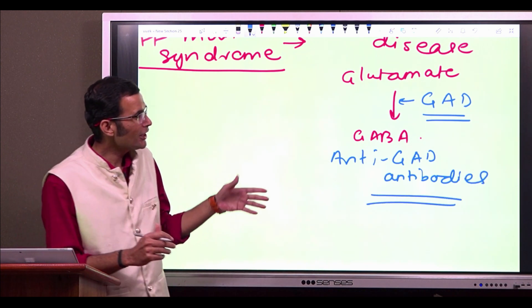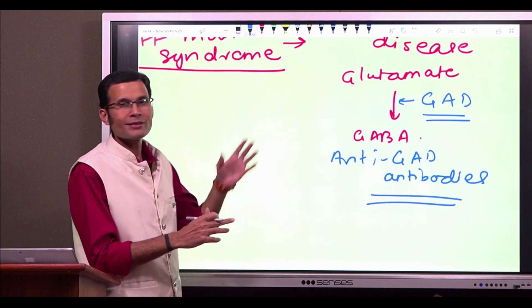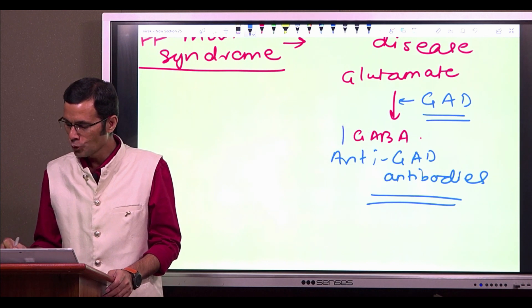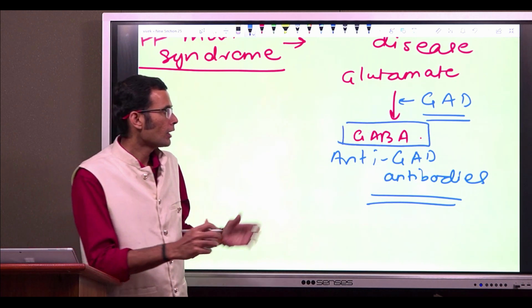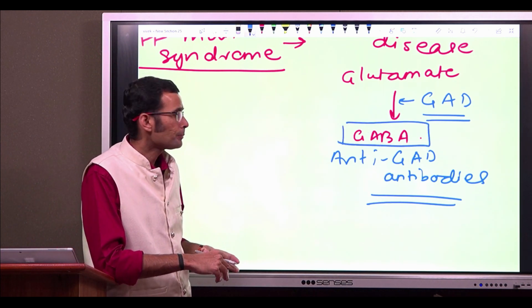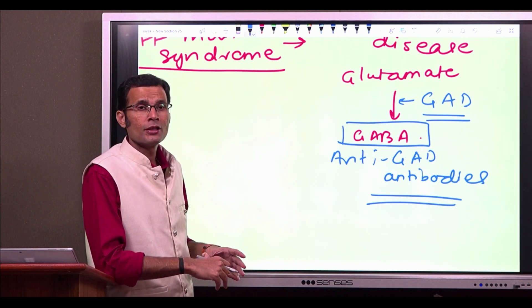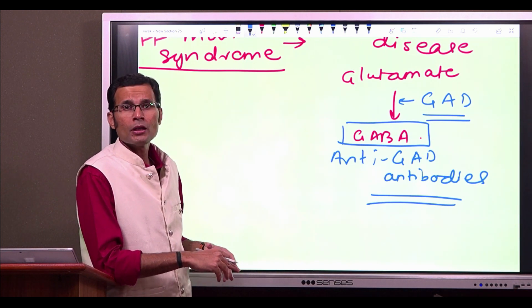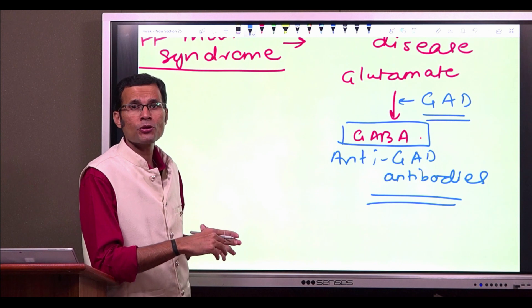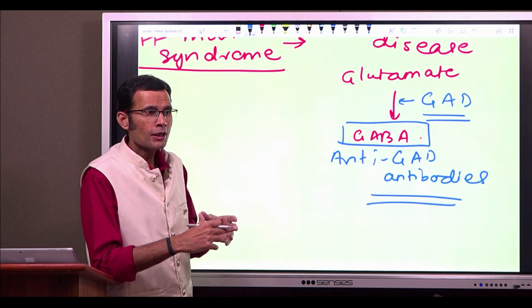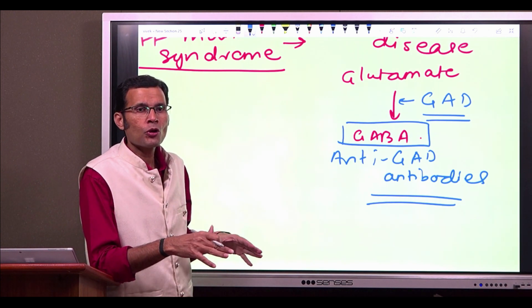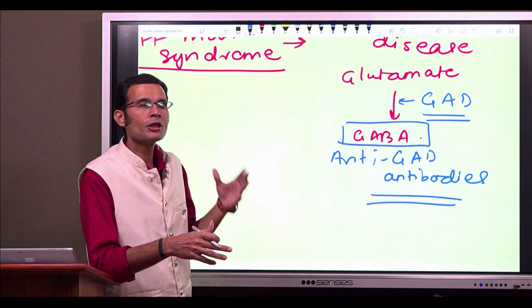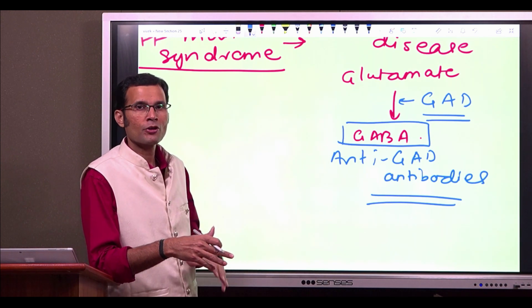Now because of these anti-GAD antibodies, obviously there would be no GABA formation. GABA formation would be deficient. And since there is no GABA, which is an inhibitory neurotransmitter, therefore the upper motor neurons inhibitory influence on the lower motor neuron cannot be exerted.